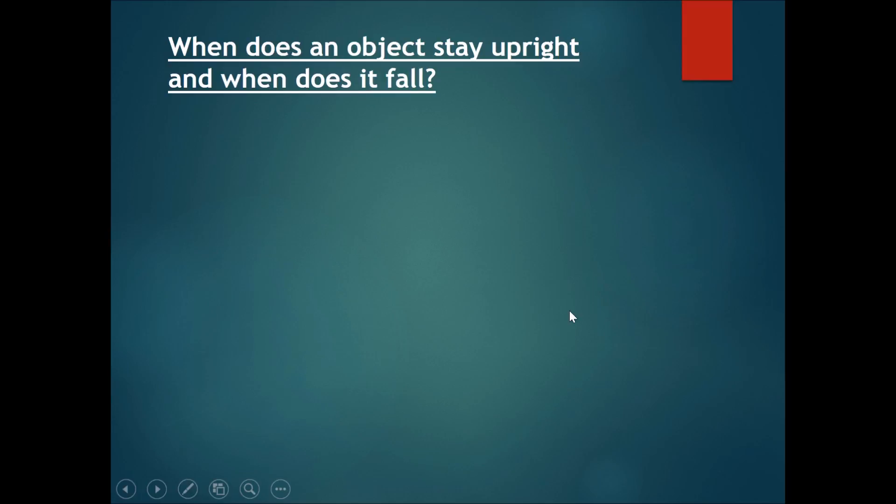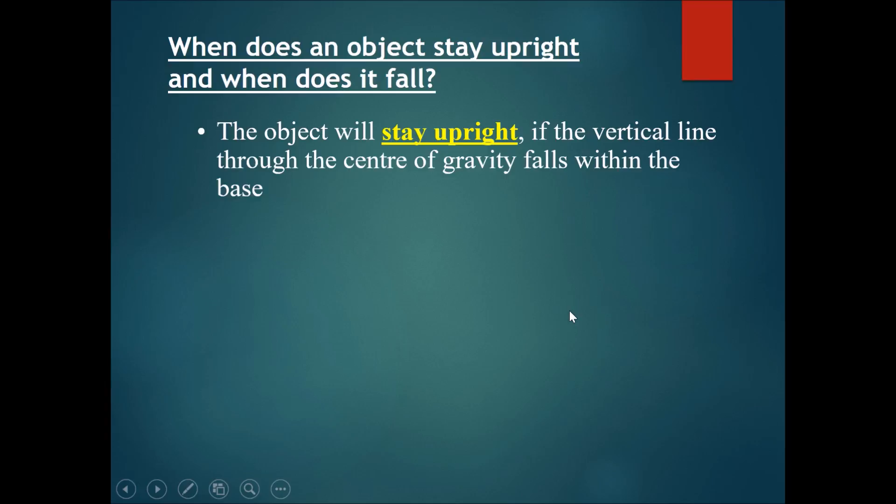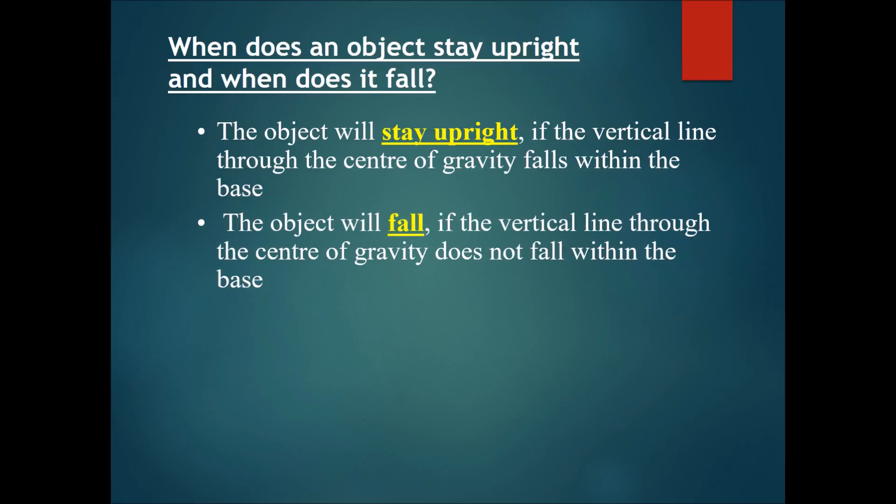When does the object stay upright and when does it fall? The object will stay upright if the vertical line through the center of gravity still falls within the base. The object will fall if the vertical line through the center of gravity does not fall within the base or if it has exceeded the base.